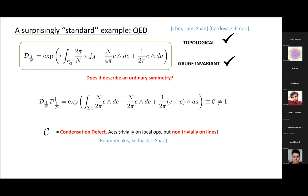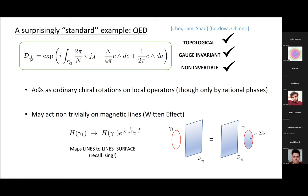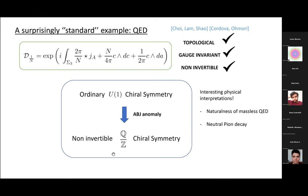So this is a non-invertible operator. These operators act as chiral rotations on local operators, but we are only restricted to rational phases — this is the only way we can use the fractional quantum Hall state. For any irrational value of the rotation angle this is not possible. These operators may also act non-trivially on magnetic lines by some version of the Witten effect. So in this interesting example, the ordinary U(1) chiral symmetry, instead of being completely broken by the ABJ anomaly, gets mutated into an infinite set of chiral symmetry rotations labeled by rational numbers — and these are non-invertible, but they are still there.